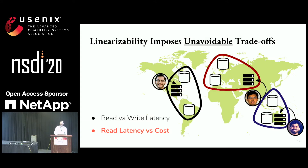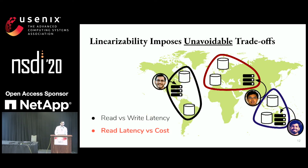This means we double our storage costs if we're using replication, and we also have to transfer much more data over the WAN, which is expensive. There's a similar trade-off between write latency and cost. For the rest of this talk, I'm going to focus on storage to simplify the discussion.